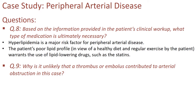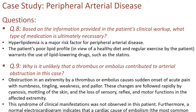Why is it unlikely that a thrombus or embolus contributed to the arterial obstruction in this case? The key point is that obstruction by a thrombus or embolus causes sudden onset of acute pain with numbness, tingling, weakness, and pallor, followed rapidly by cyanosis, mottling of the skin, and loss of sensory, reflex, and motor functions in the affected extremity. This syndrome was not observed in this patient — the onset was gradual. Furthermore, a normal electrocardiogram indicates that a cardiac cause of embolism, which is the most common cause of arterial emboli, is highly unlikely.